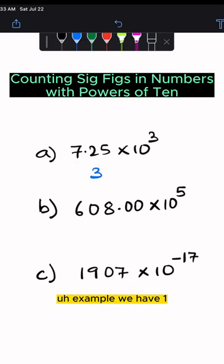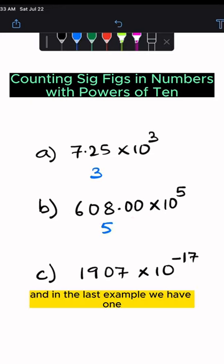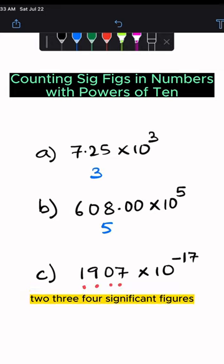In the next example, we have 1, 2, 3, 4, 5 significant figures. And in the last example, we have 1, 2, 3, 4 significant figures.